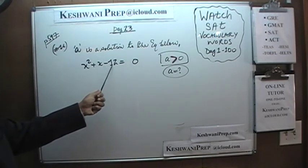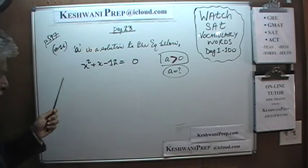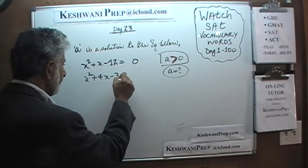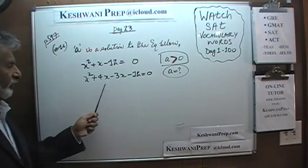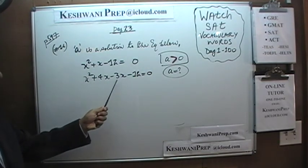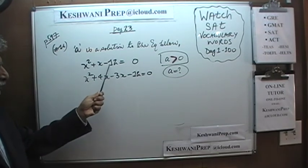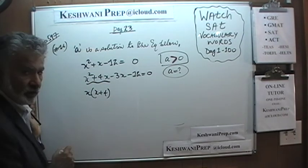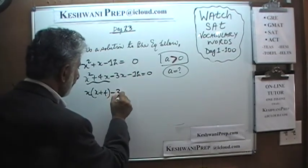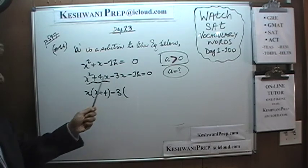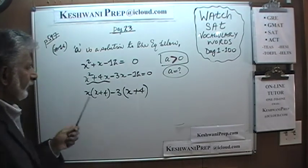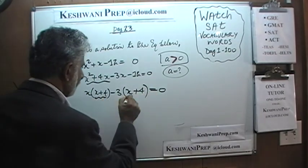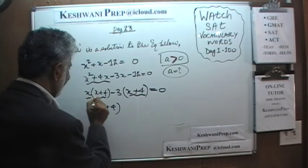We are looking for two numbers whose product is negative 12 and whose sum is positive 1. Very simple — it is going to be positive 4 and negative 3. Positive 4 and negative 3 give us positive x: positive 4x and negative 3x. When we multiply them, positive 4x and negative 3x give us negative 12x squared. In these two terms we have x common, so we have x times the quantity (x plus 4), and here we take out negative 3 as a common factor, leaving (x plus 4) as well, giving us negative 3 times (x plus 4).